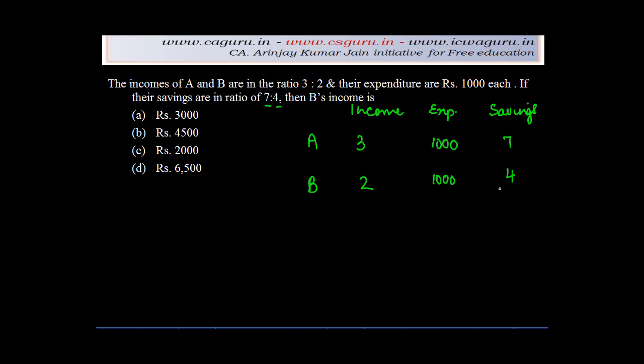You need to find out B's income. Now, what is the relationship between income, expense, and savings? Basically, savings equals income minus expenditure. Let's say the income of A and B